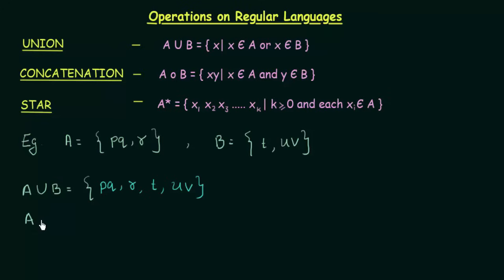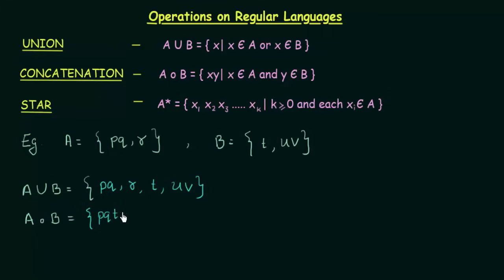Coming to Concatenation of A and B — concatenation means joining two or more symbols or strings together. We need XY such that X belongs to A and Y belongs to B, meaning one element from A and one element from B joined together. So we can join P with T to get PT, and join P with UV to get PUV. Similarly we can join R with T to get RT.